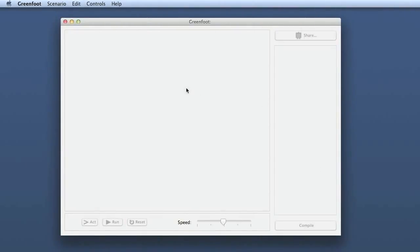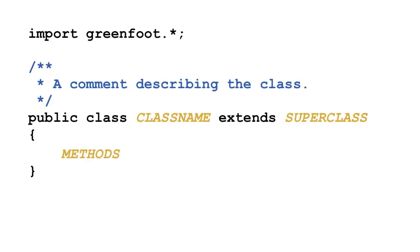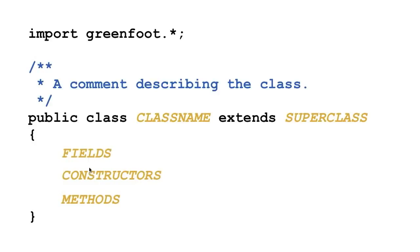This time we start with a completely empty Greenfoot window and we will create a new project. The things that we are about to revise or review is the structure of a class. We've already seen this structure in an earlier episode — there's a comment, a class header, and then methods between curly brackets. But in fact there are also fields and constructors potentially in the body of the class, and these are optional.